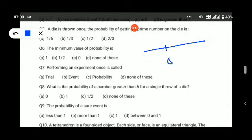The minimum value of probability: we already discussed that probability ranges from zero to one, so the minimum value is zero. Performing an experiment once is called a trial.